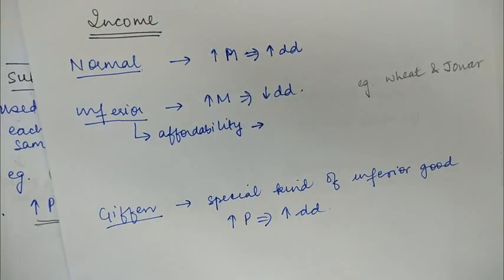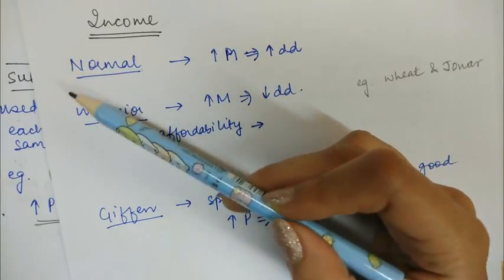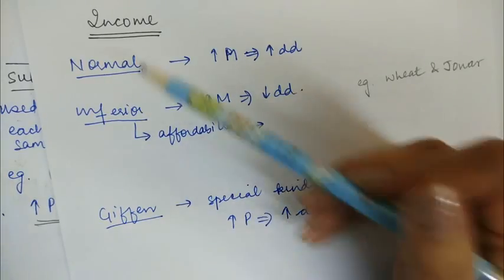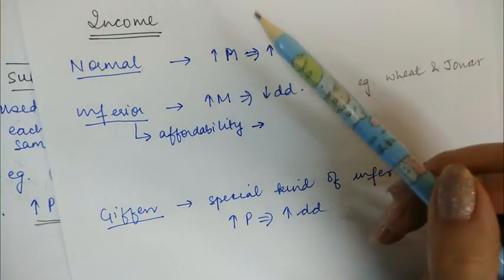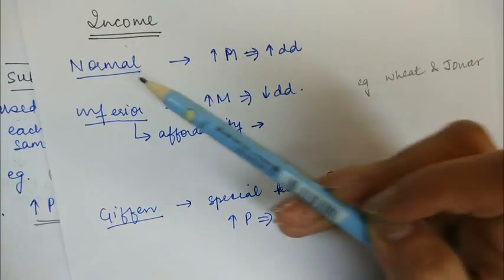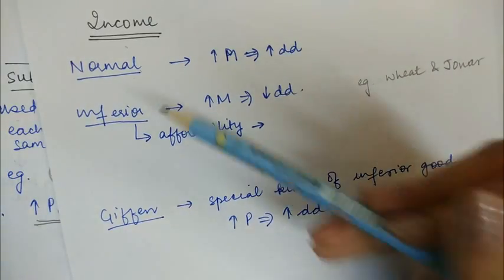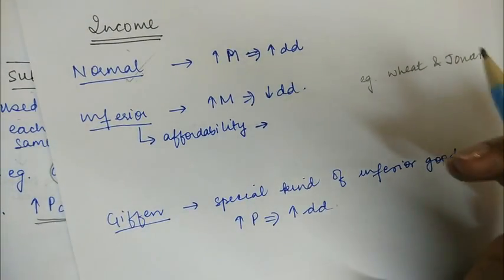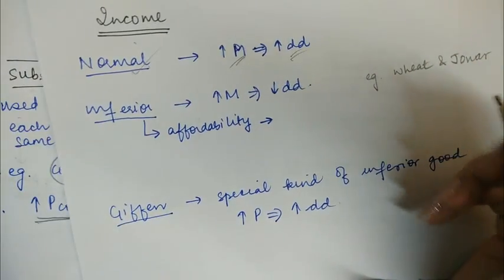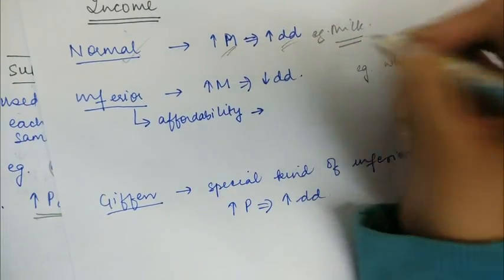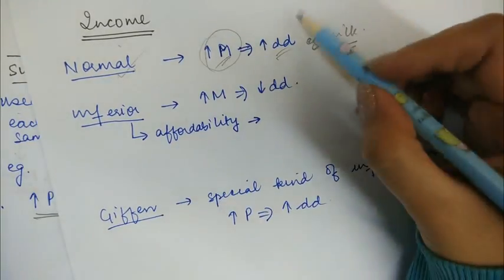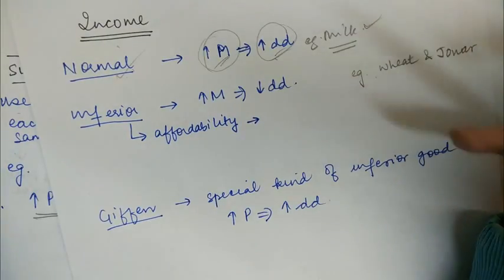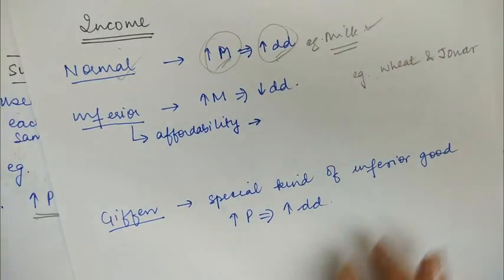Income of the consumer is also a determinant of demand. There are three kinds of goods. For normal goods, with an increase in income, the demand for the good also increases. For example, milk — if the consumer's income increases, they will consume more milk than before.